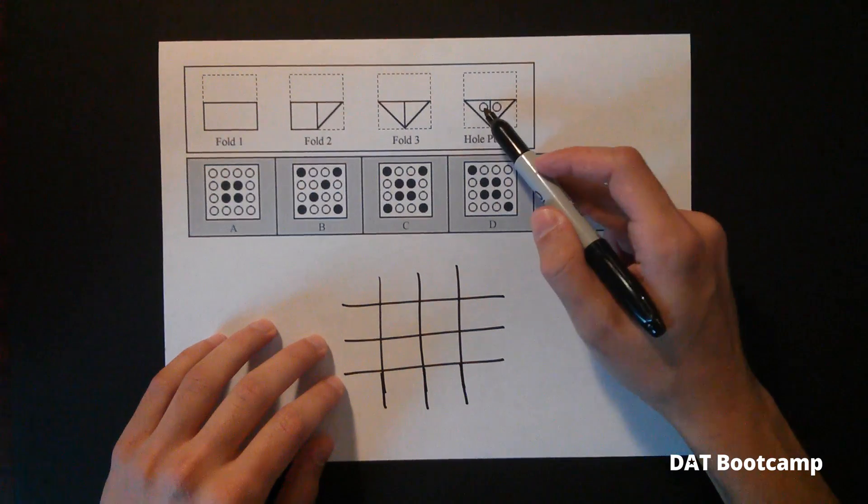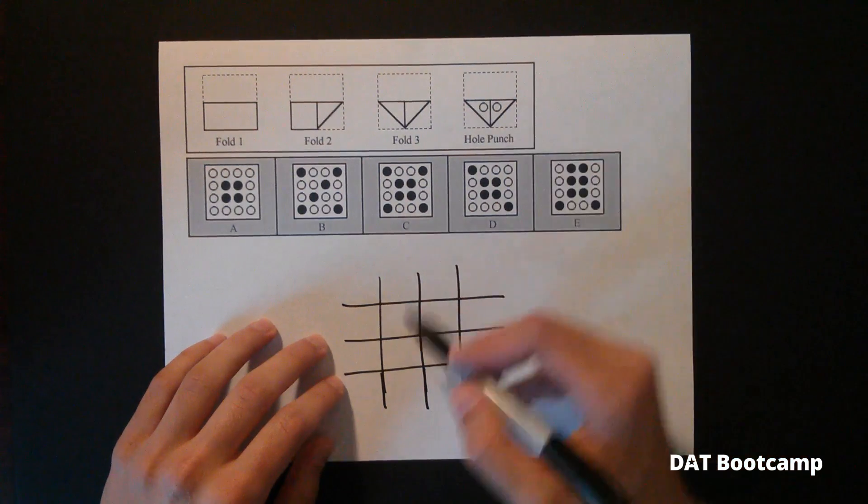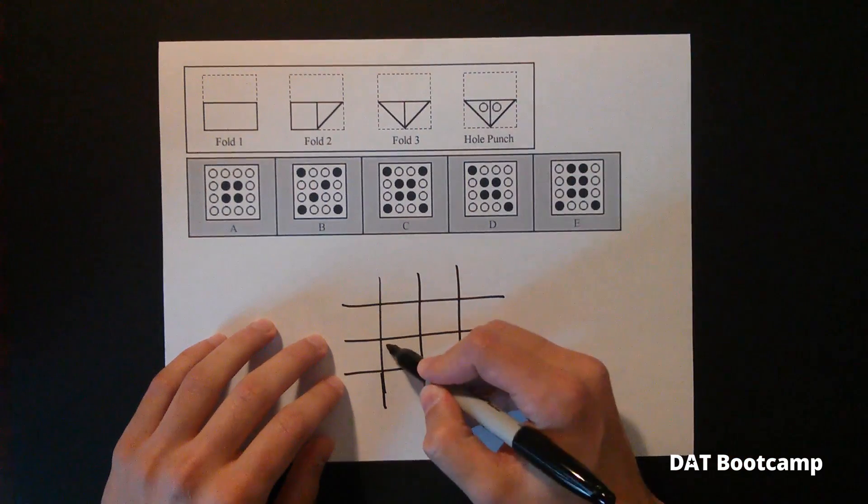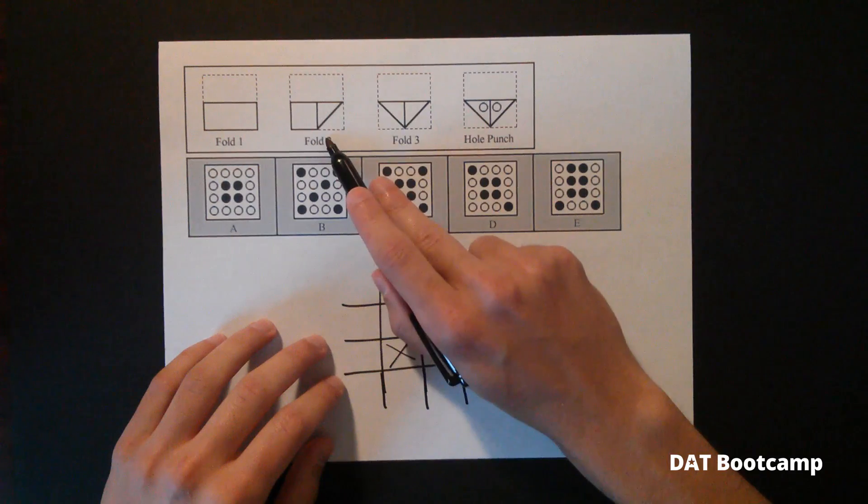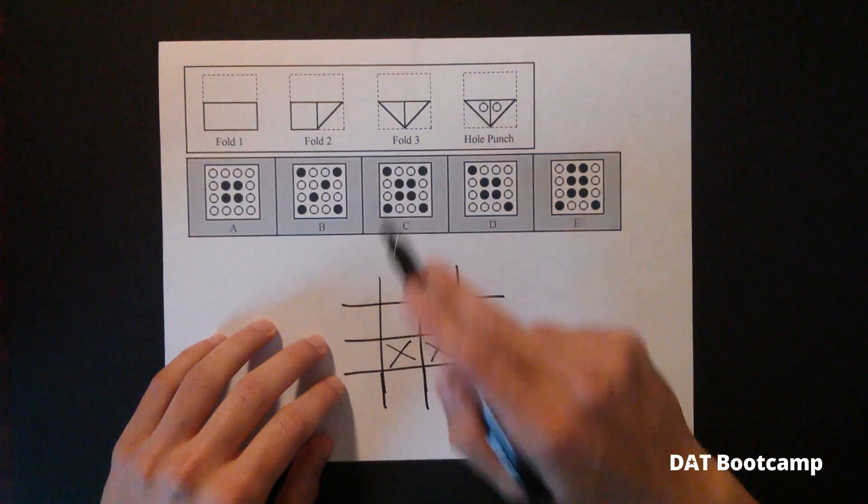And then we're going to mark with an X wherever we see a hole. So for example, on this one, we see there's a hole here. There's a hole here. So those two holes correspond to right here and right here. Now you go fold by fold. And anytime you see a new hole appear, you just mark it on your paper.